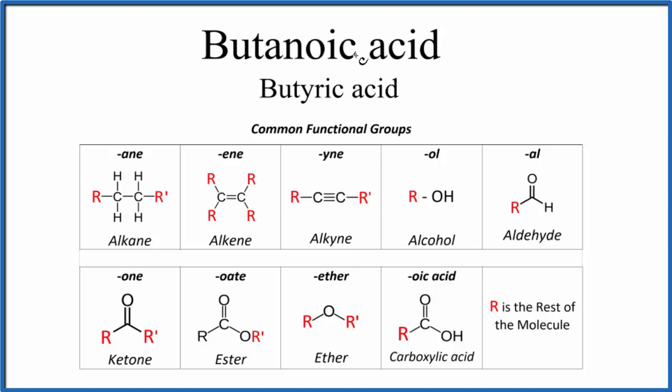So when you see the name butanoic acid, we have the term acid here, then we have OIC. When you see OIC followed by acid, you have a carboxylic acid. So you'll have the rest of the molecule, but then you'll have a carbon double bonded to an oxygen, and the carbon will also be bonded to an OH group.